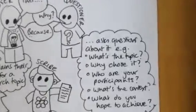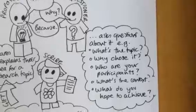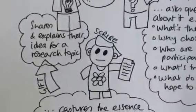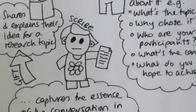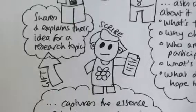What's the topic? Why choose it? Who are your participants? What's the context? What do you hope to achieve and so on? And then really importantly you have a separate scribe, so you're not asking the questioner to also write things down or you're not asking the proposer to write things down.